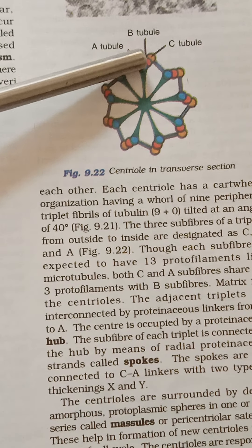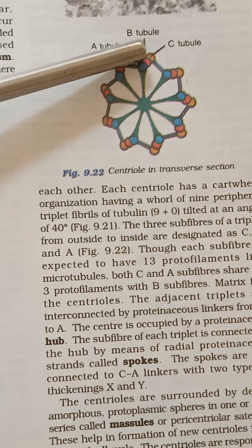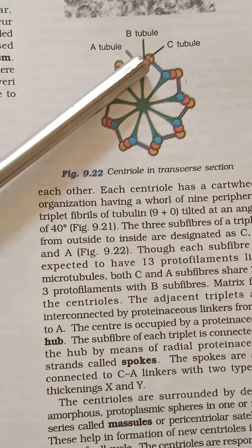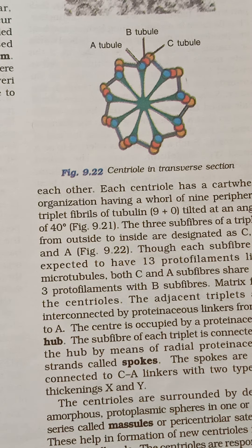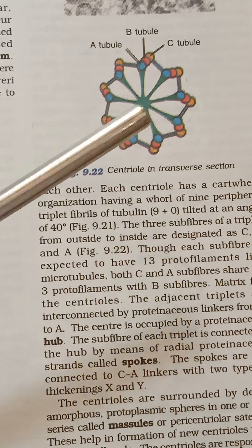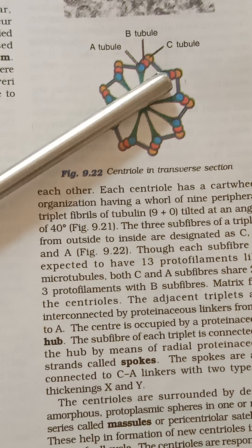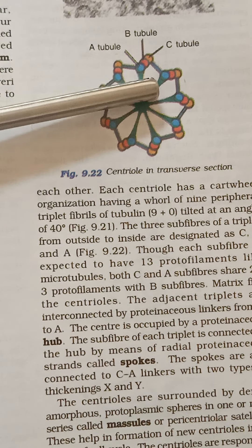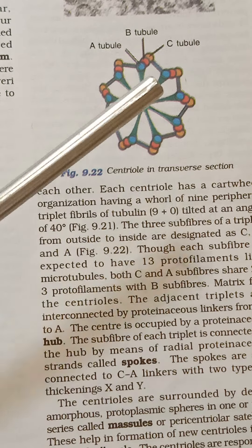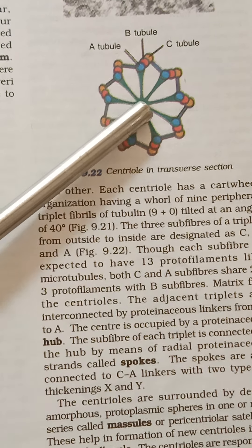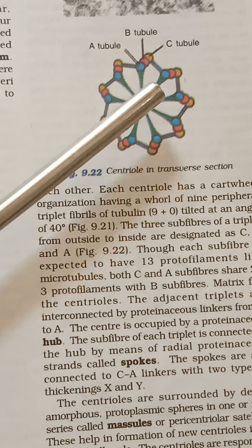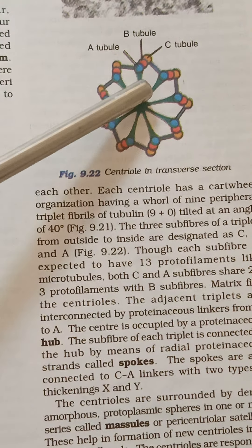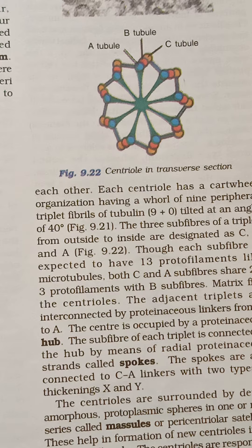One triplet has 3 microtubules: A, B, and C. A has 13 protofilaments, B has 10 protofilaments, and C has 11 protofilaments. One triplet is attached to the other through AC linkers. Each triplet is also connected to the central proteinaceous hub through a radial spoke, with 9 radial spokes in total.